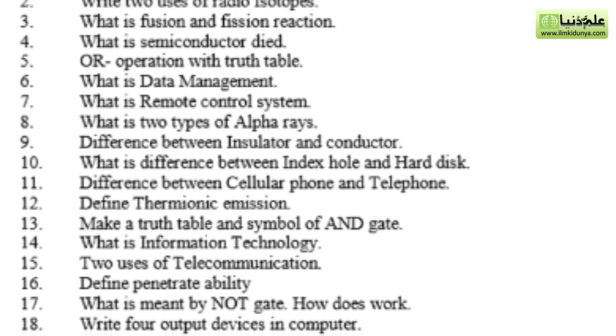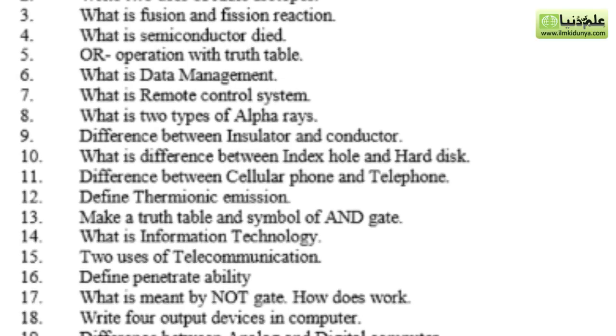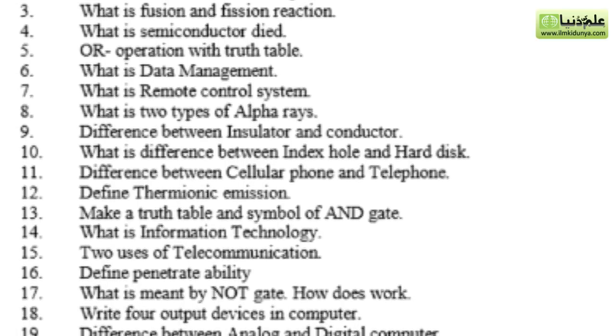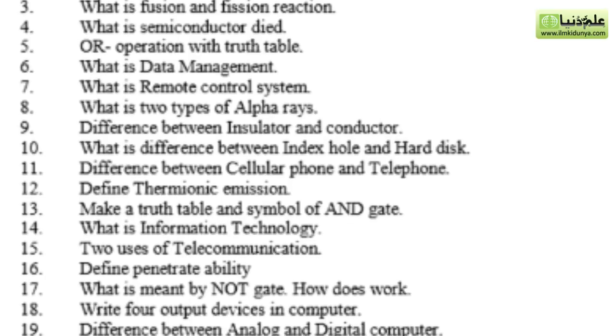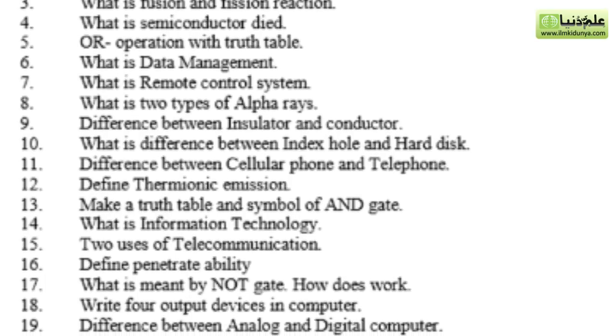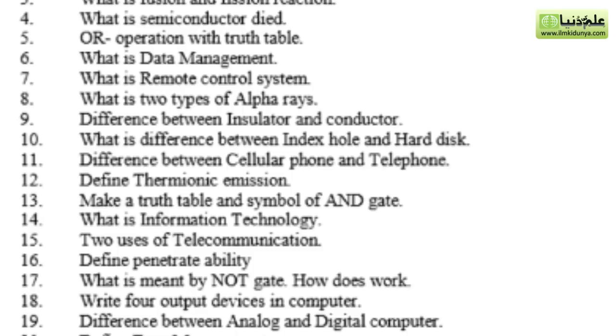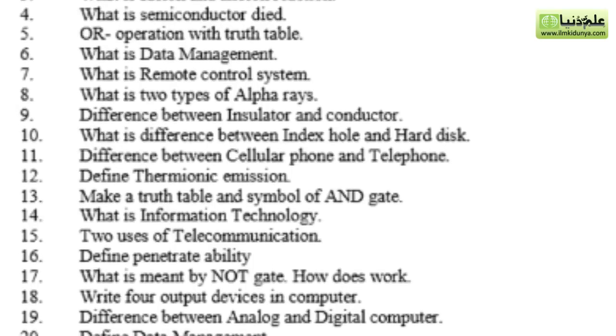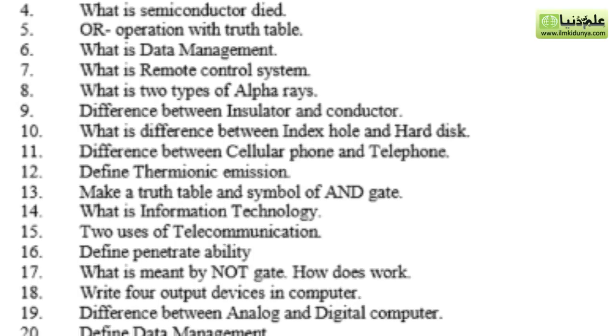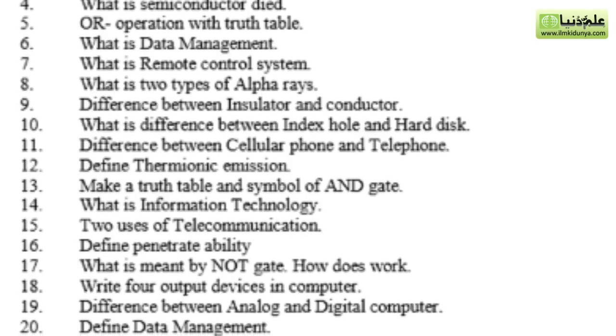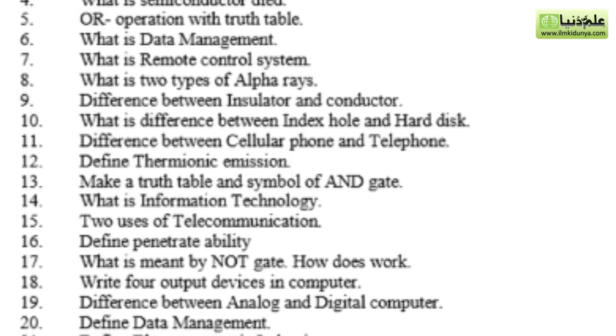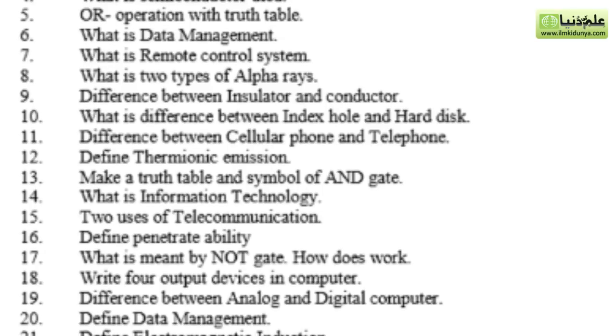8, what is two types of alpha rays? 9, difference between insulator and conductor. 10, what is difference between cellular phone and telephone? 12, you have defined thermionic emission.